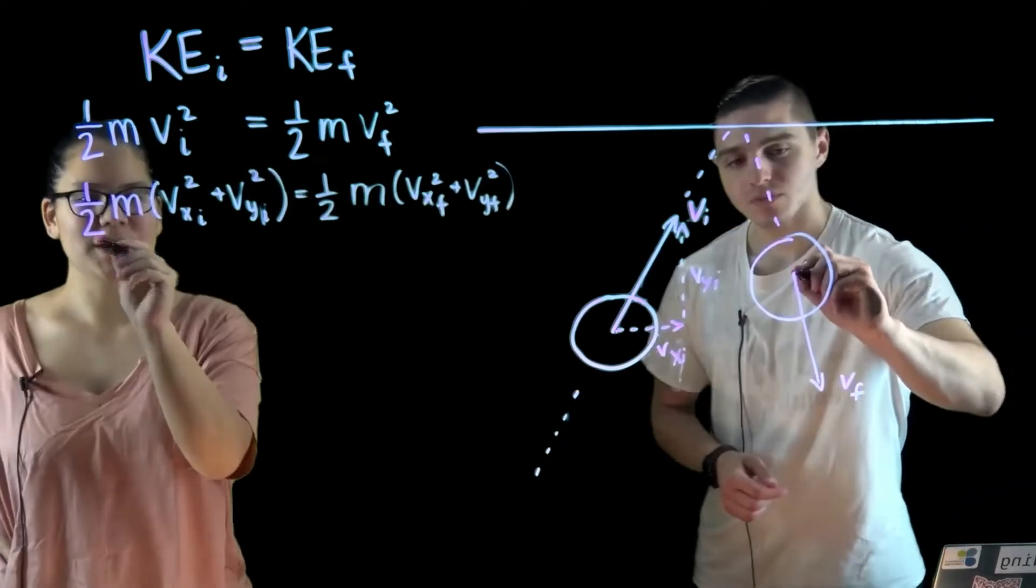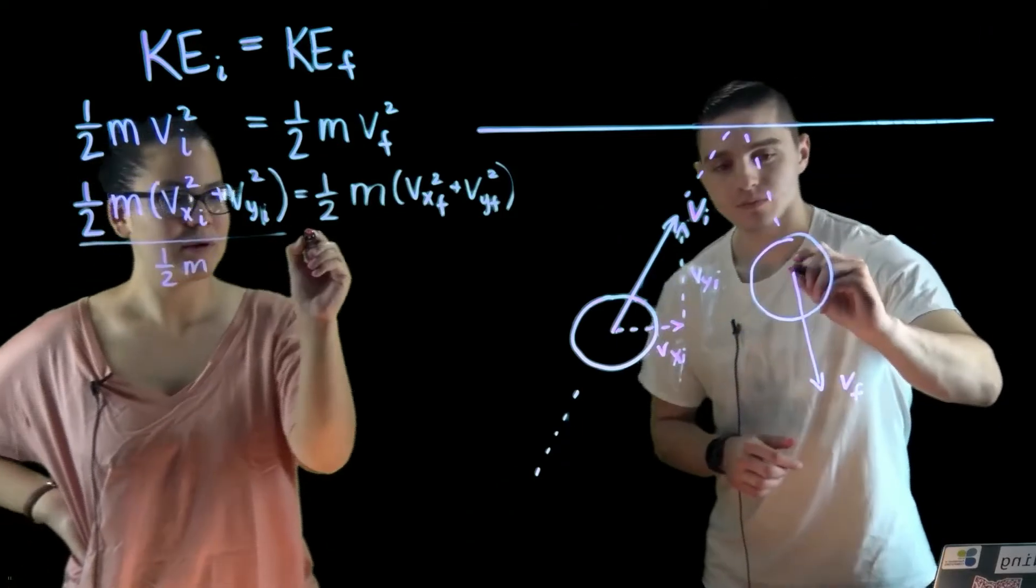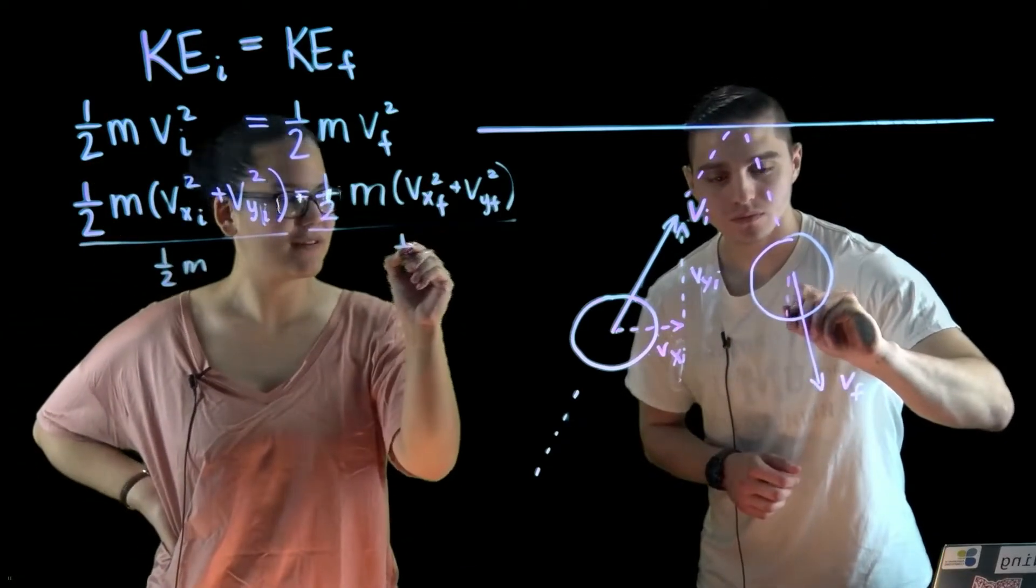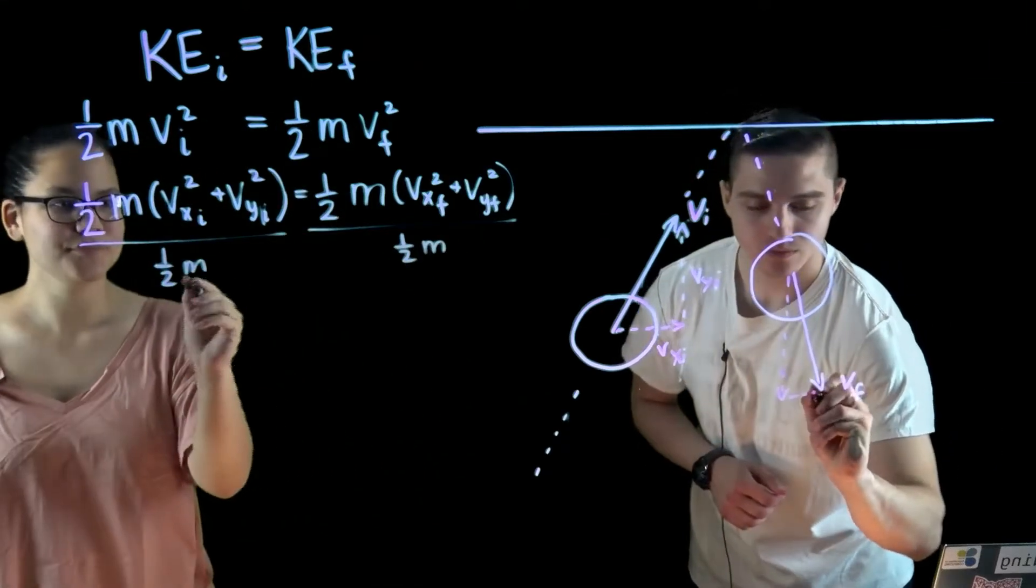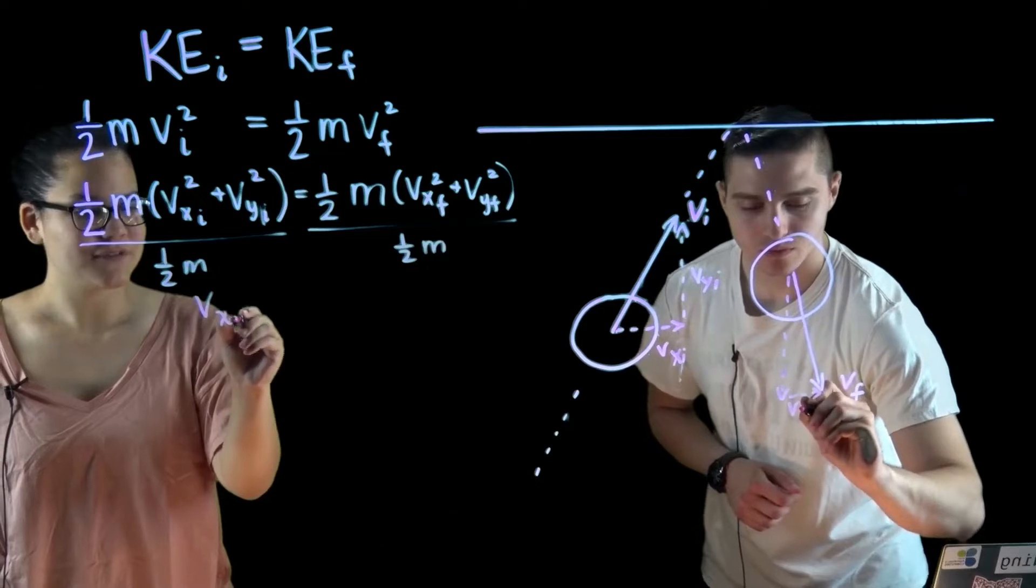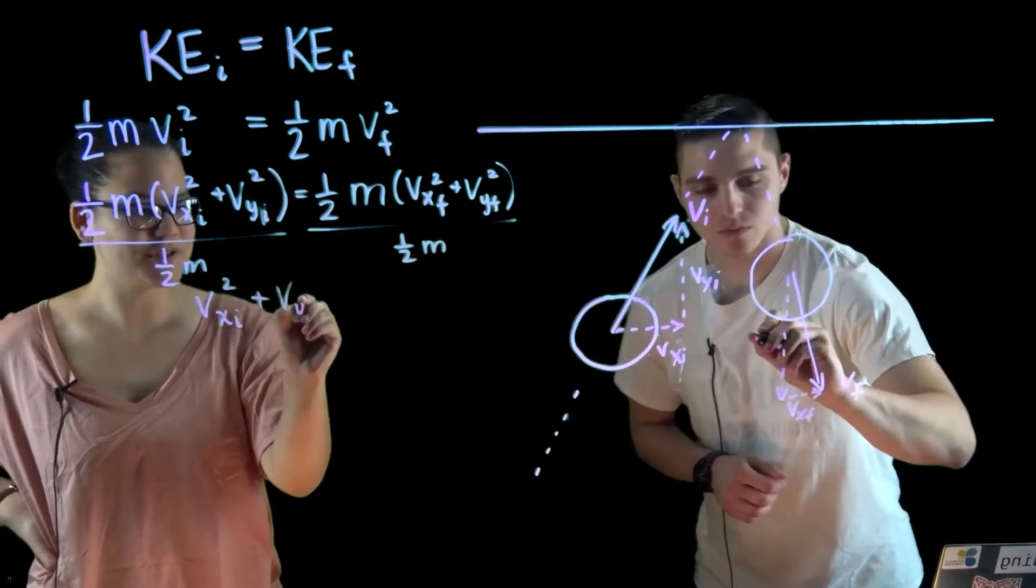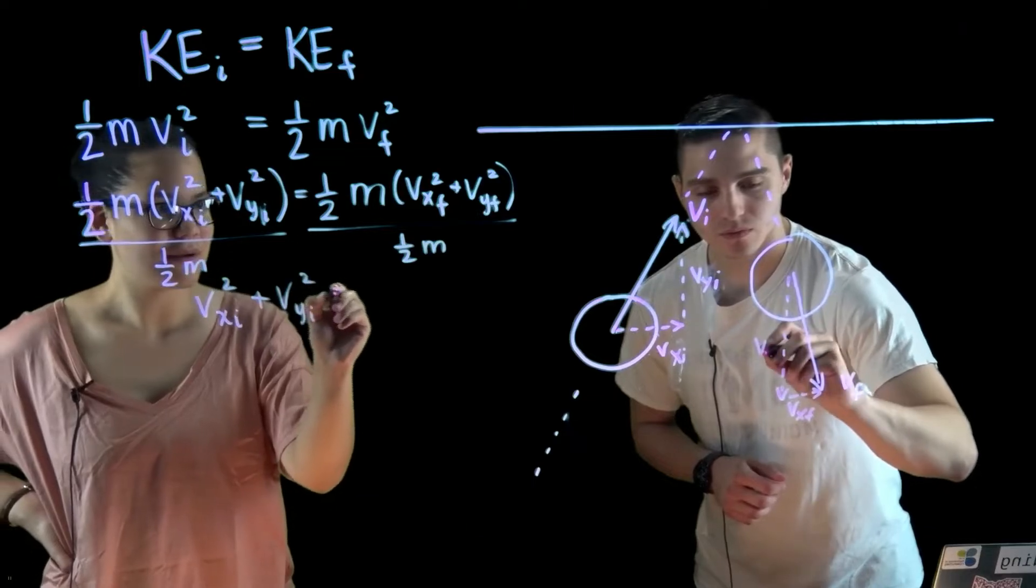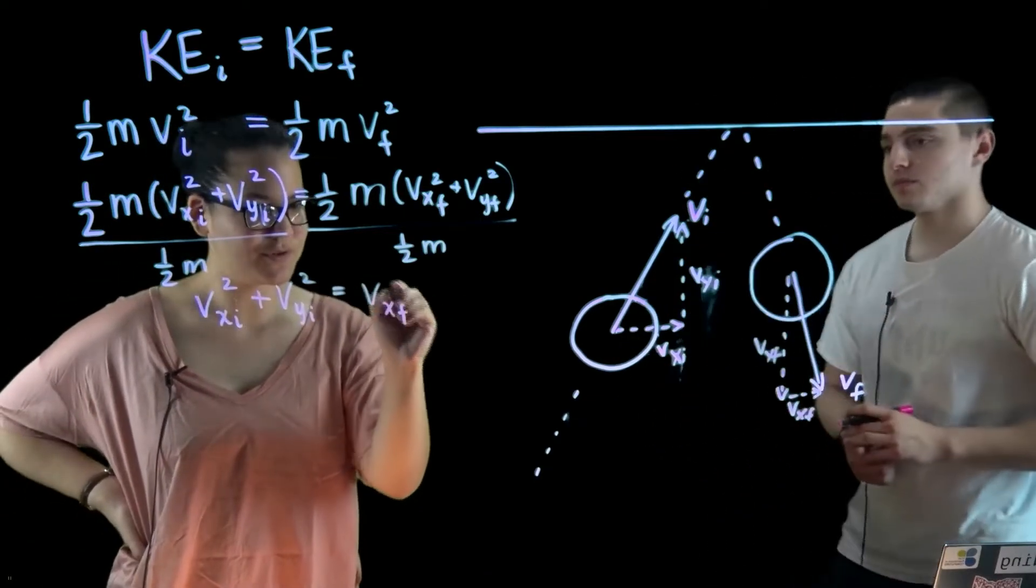Alright, so we have this expression, and we can get rid of some of these variables by dividing by one-half m on both sides. And now we just have a relationship between these velocity components before the collision and the components afterwards, which Joe just drew out there.